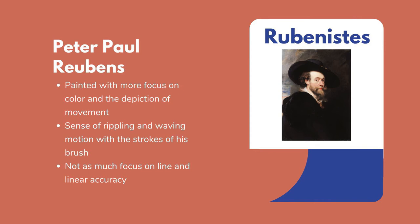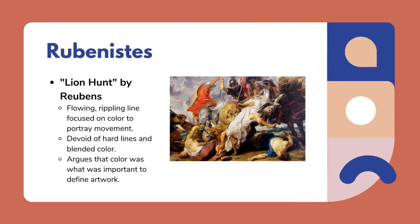In contrast, Peter Paul Rubens painted with more focus on color than line, depicting movement through loose brushstrokes, usually portraying clouds in the backgrounds. His self-portrait uses loose brushstrokes to depict the soft lines of his beard and clouds in the background, with a sense of softness different from Poussin. The Lion Hunt by Rubens has flowing, rippling lines focused on color to portray movement, with lots of curvature in muscles, fabric, and the lions. Rubens argued that color was what was important to define an artwork, not lines.